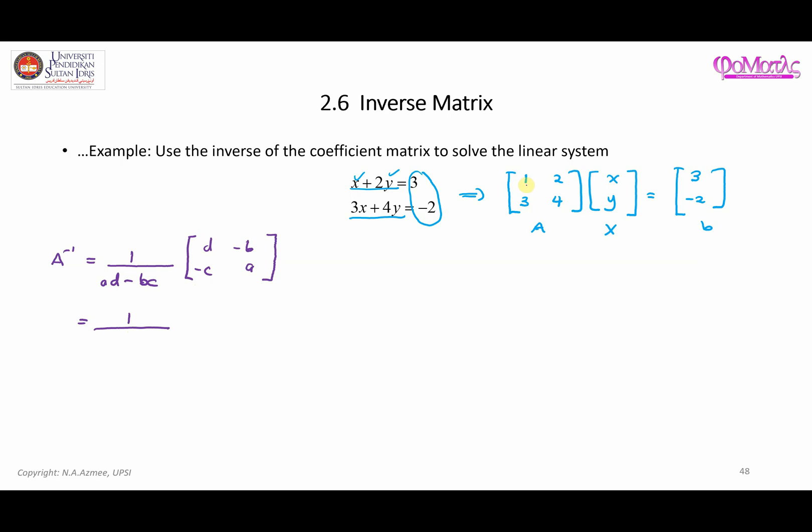Now, what is A? So A times D, this is four minus B times C, so this is six. And then you switch the position of these two values here. So you have here four and one. And then these values here will be given a negative sign. So we have negative two and negative three. We can simplify this. This can be simplified as four over negative two is negative two, negative two over negative two is one, negative three over negative two is three over two, one here is negative one over two. So this is the inverse of matrix A.